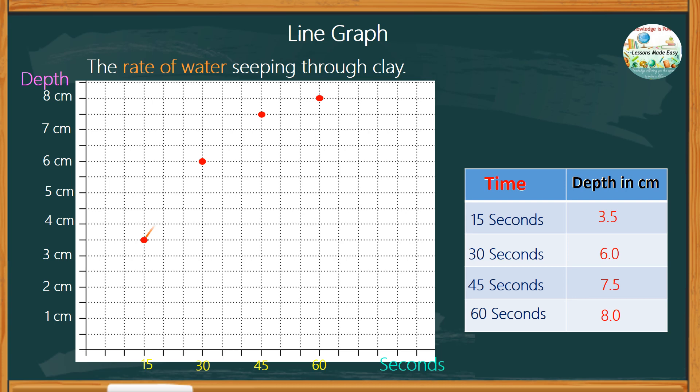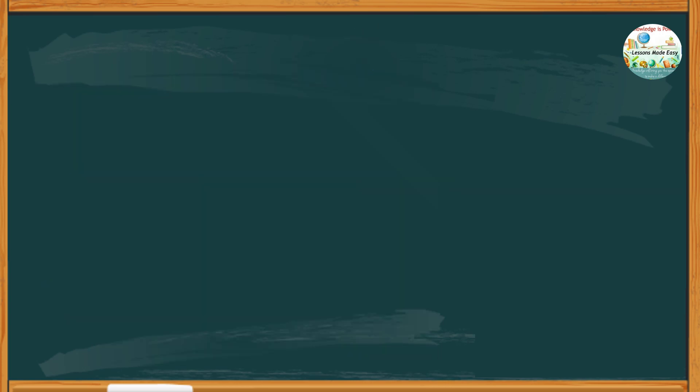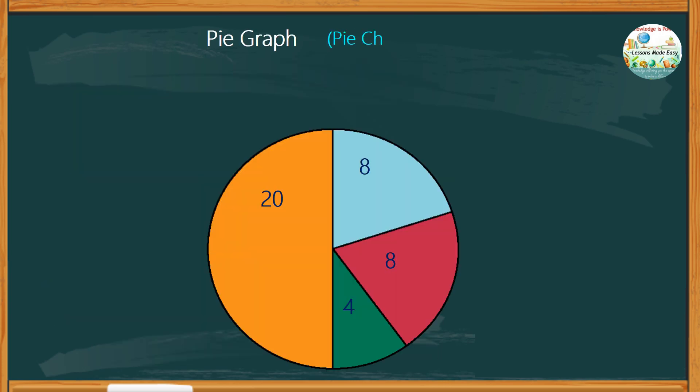From the first point to the second point, to the third, and to the last point. And there you have it! This is a simple line graph showing the rates of water seeping through clay. What about a pie graph or a pie chart?